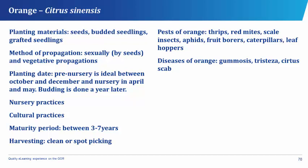Harvesting is done by clean or spot picking. The pests that attack orange are the thrips, the red mites, the scale insects, the aphids, the fruit borers, the caterpillars, and the leaf hoppers. While the diseases suffered by oranges are the gummosis, the tristeza, and the citrus scab.